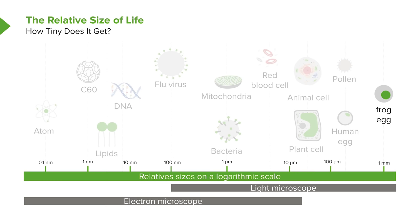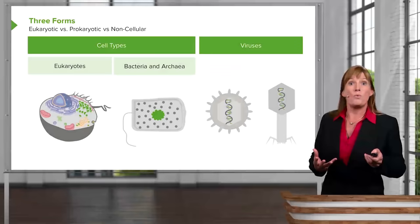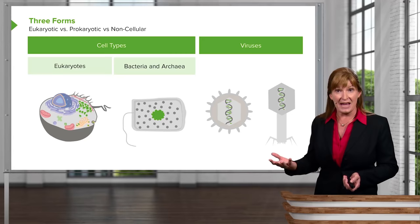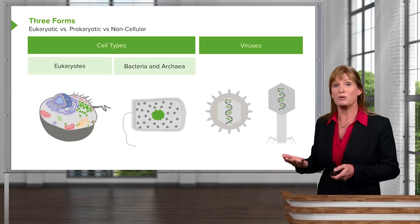Before we move into the course, it's really important for us to establish what life is. Some might debate that viruses and prions are non-living, but certainly cells are living. We're going to explore some brief comparisons between eukaryotic and bacterial or prokaryotic cells. There's another type of cells called archaeans, but they're not really components of the human body. We're going to be dealing primarily with bacterial cells and eukaryotic cells, and on occasion we'll be exploring some mechanisms of viruses.